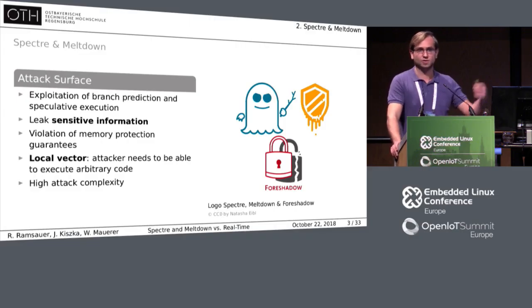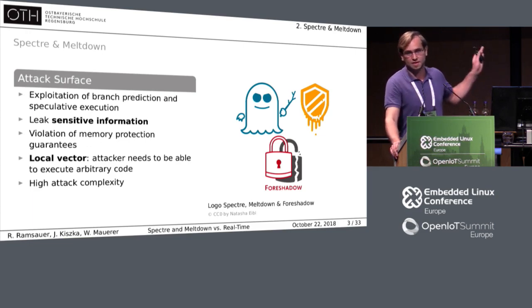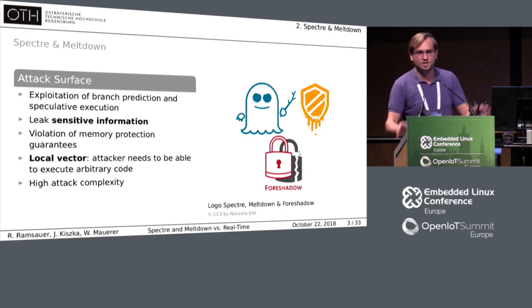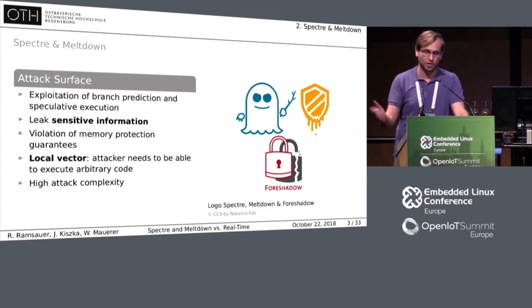If an affected system runs a browser which executes JavaScript, this is already the case. There are some other attacks like net-spectre that also form a remote vector, a surface for a remote attack, but even under laboratory conditions they were only able to leak bytes per hour, so this will not be focused on in this talk. We also have to keep in mind that all of these attacks have a rather high complexity.